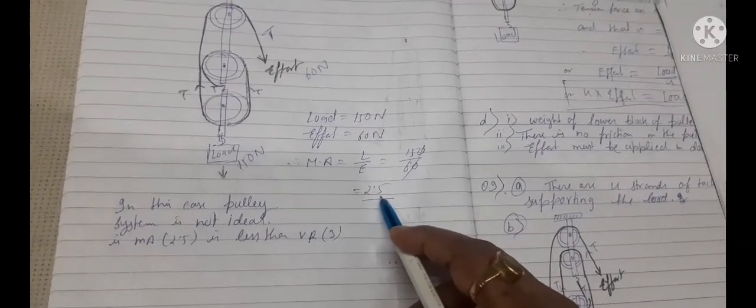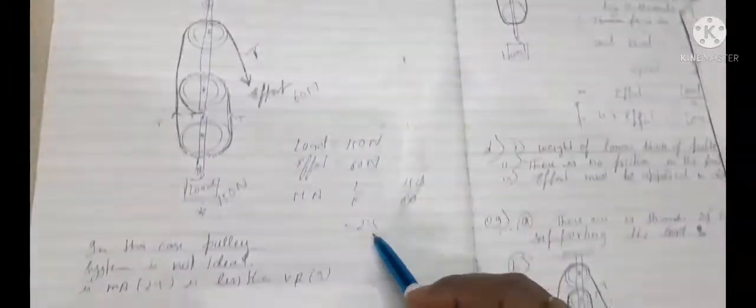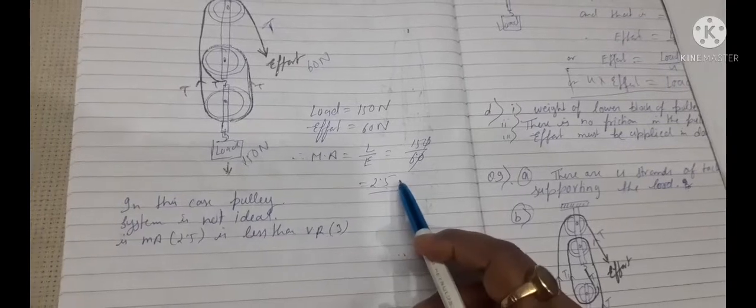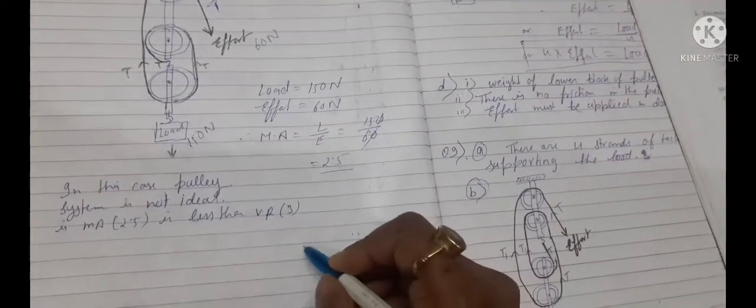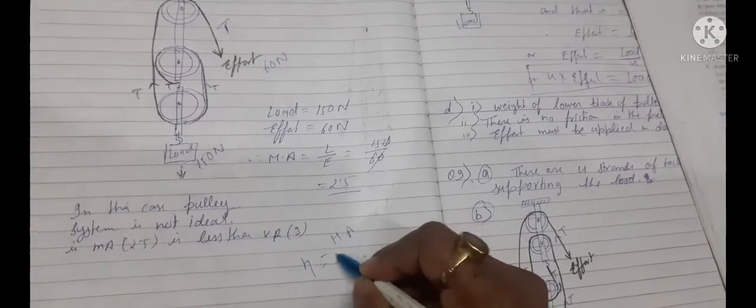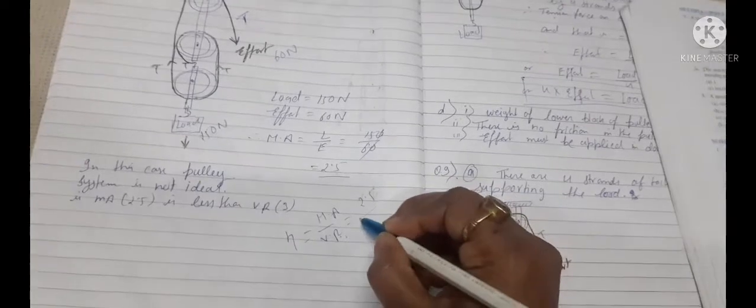You see, velocity ratio is 3, mechanical advantage is 2.5. It means if we are going to calculate the efficiency, eta equals to what? MA upon VR.